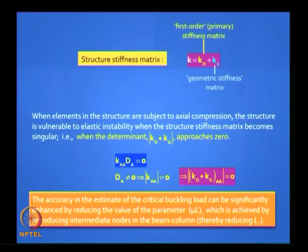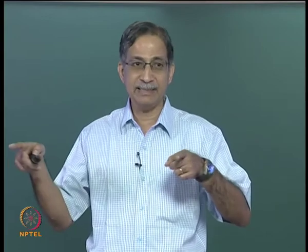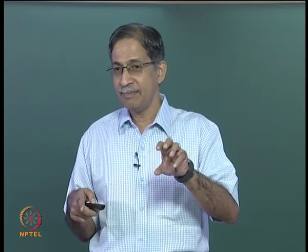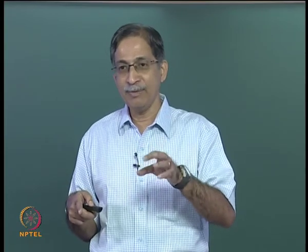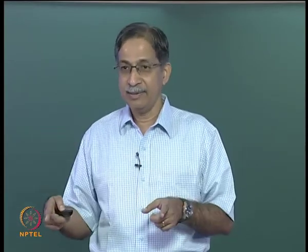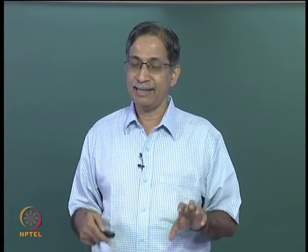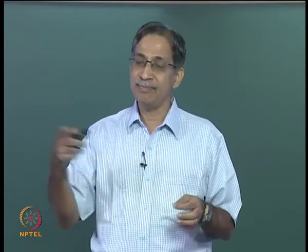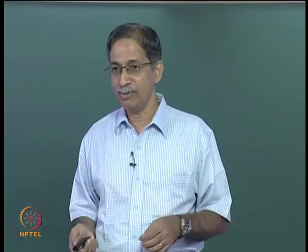The accuracy in the estimate of the critical buckling load can be enhanced by reducing the value of the parameter μL. Please note those approximations are valid — reducing to two terms in the Taylor series expansion of the sine and cosine function — only if μL is small. Now μL equals the square root of PL²/EI. You have no control over P or EI, but you have control over L. So if you make your element smaller, you make μL smaller, and you get more nodes and a better picture of the mode shape.